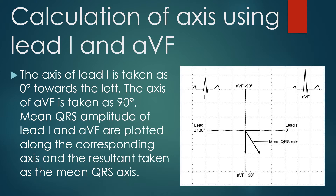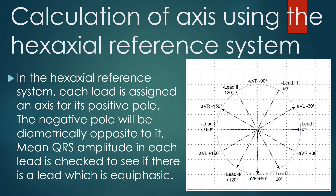The axis of lead 1 is taken as 0 degrees towards the left, while the axis of AVF is taken as 90 degrees. Mean QRS amplitude of lead 1 and AVF are plotted along the corresponding axis and the resultant taken as the mean QRS axis. In the hexaxial reference system, each lead is assigned an axis for its positive pole. Lead 1 axis is 0 degrees, lead 2 is 60 degrees, AVF is 90 degrees, lead 3 is 120 degrees, AVL is minus 30 degrees, and AVR is minus 150 degrees.